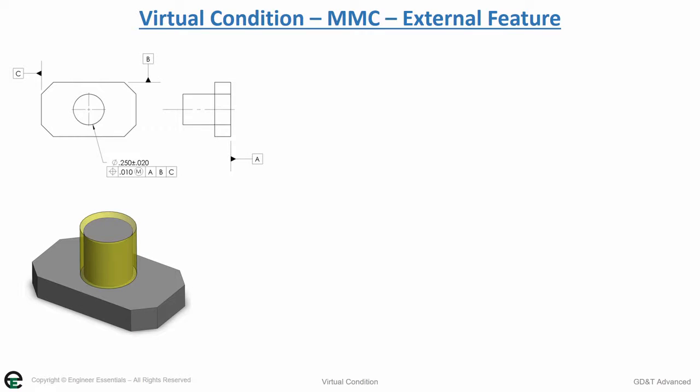In this case, it's your outer boundary that you're controlling with the virtual condition. Remember, the goal with MMC is to ensure proper assembly. We're trying to calculate the maximum position error and size error that could contribute to this part not assembling.